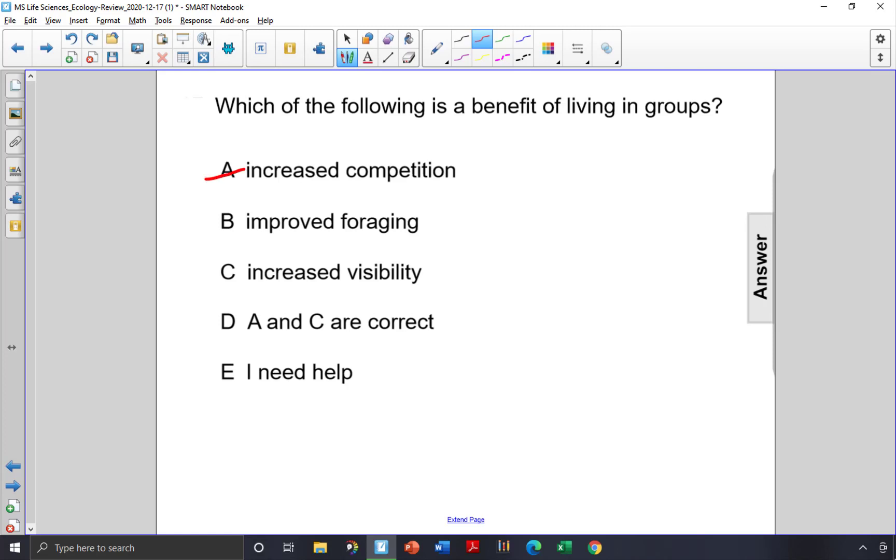Choice C, increased visibility, is not a benefit either because if members of the group are more easily seen by predators, that will not allow the population to grow either.